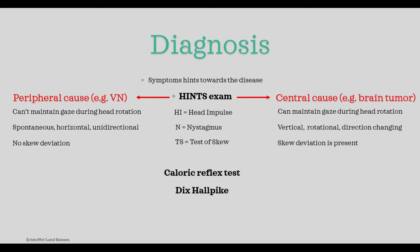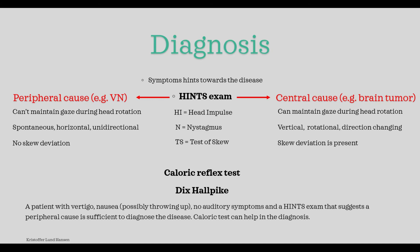As a bonus, the caloric test can be performed to increase suspicion, with a link in the description for more details. Dix-Hallpike is a specific test for BPPV and can be done for differential diagnosis. To conclude the diagnosis: if the patient has acute-onset vertigo, is nauseous, possibly vomiting, has no symptoms related to hearing, and the HINTS exam suggests a peripheral cause, then we can diagnose the disease.